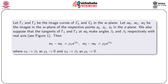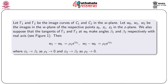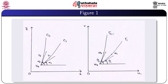Let γ₁ and γ₂ be the image curves of C₁ and C₂ in the w-plane. Let w₀, w₁, w₂ be the images in the w-plane of z₀, z₁, z₂ in the z-plane. We suppose that the tangents of γ₁ and γ₂ at w₀ make angles β₁ and β₂ respectively with the real axis. Then w₁ − w₀ = ρ₁e^(iφ₁) and w₂ − w₀ = ρ₂e^(iφ₂), where φ₁ → β₁ as ρ₁ → 0 and φ₂ → β₂ as ρ₂ → 0. This is illustrated in the figure.